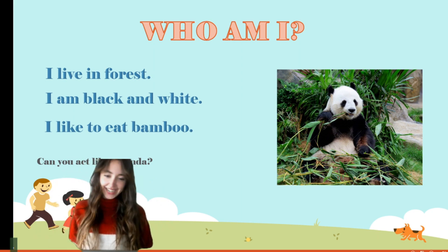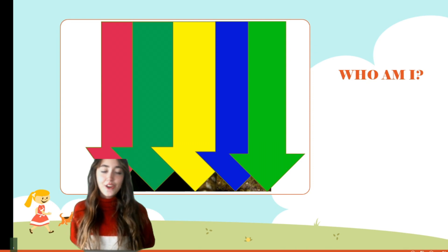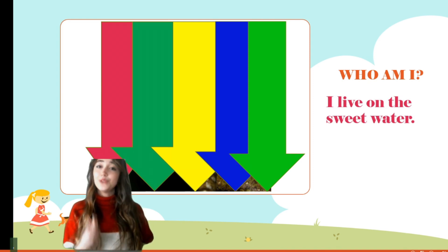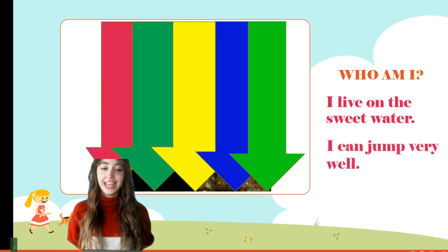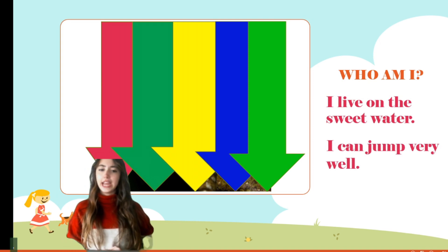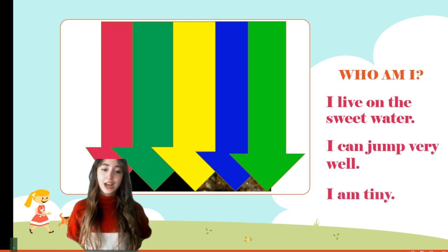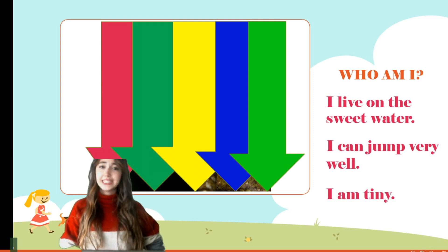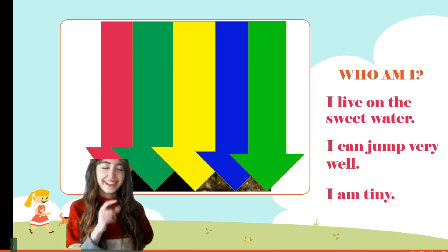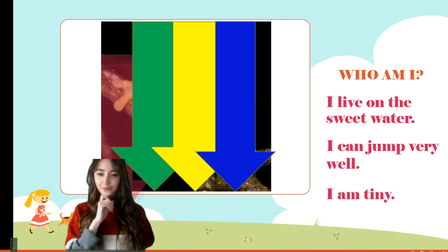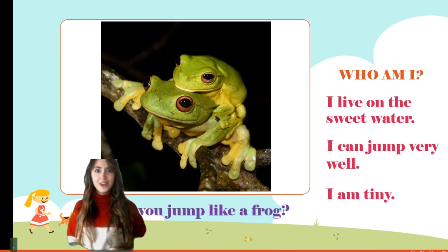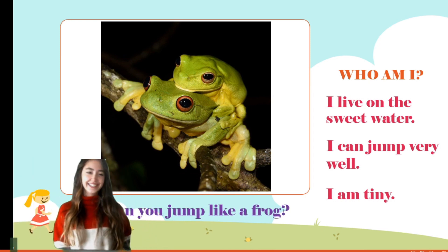Let's look at the next one. Who am I? I live in sweet water — this animal doesn't like salty water, but it likes sweet water. And it can jump very well. Could it be a kangaroo? But it says I am tiny, so it cannot be a kangaroo. Look — there are frogs! It's a frog! Can you jump like one?